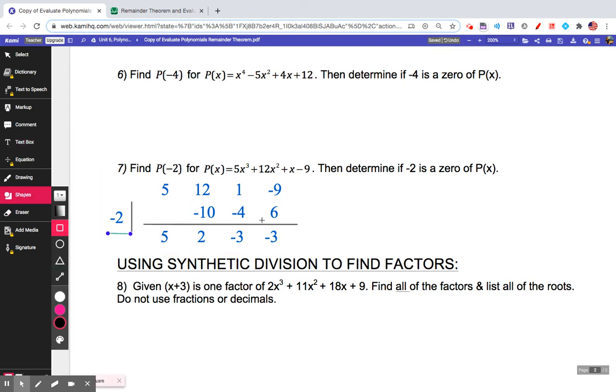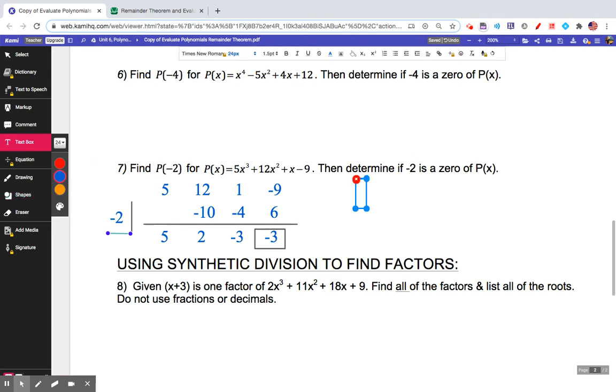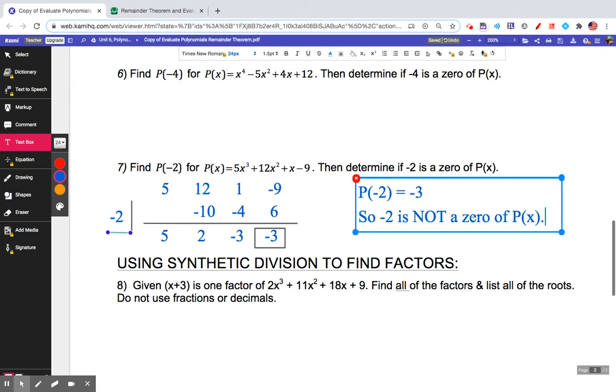So what does that mean? That means I have a remainder other than zero. My remainder is -3. What does that mean in the context of this situation? That means the value of the function P at x = -2 is -3. Therefore, the function passes through (-2, -3). So -2 is not a zero of P(x). Hopefully your answer matched with mine.